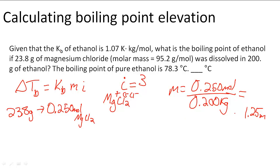Now that we have the molality and i, we can solve the problem. The change in temperature for the boiling point elevation is 1.07 K/mol times 1.25 molality times 3. When we do this, we get 4.01 Kelvin.